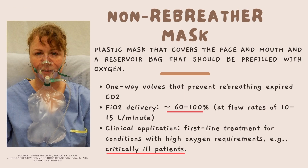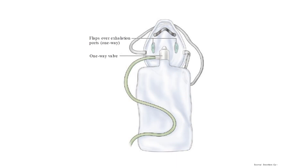Next we have the non-rebreather mask — a plastic mask that covers the face and mouth with a reservoir bag that should be pre-filled with oxygen. It has one-way valves on both sides that prevent rebreathing of expired CO2, hence the name non-rebreather mask. The FiO2 that can be delivered goes from 60% all the way up to 100%, using oxygen flow rates of 10 to 15 liters per minute. The clinical application is as first-line treatment for conditions with high oxygen requirements — for example, in critically ill patients. You can see the reservoir bag and the one-way ports on the side of the mask.